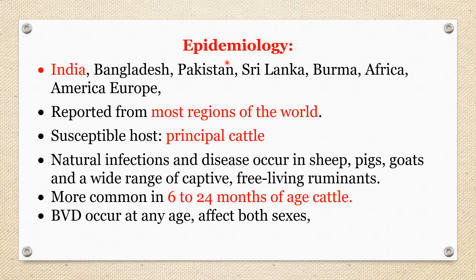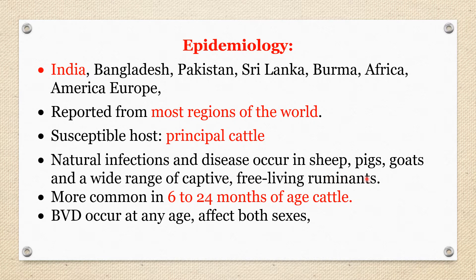Coming to epidemiology: the disease is present in India and neighboring countries — Bangladesh, Pakistan, Sri Lanka, Burma — and also present in Africa, America, and Europe, meaning the virus is reported from almost all regions of the world. The most susceptible host is cattle, but natural infection and disease also occur in sheep, pigs, goats, and a wide range of captive and free-living ruminants.